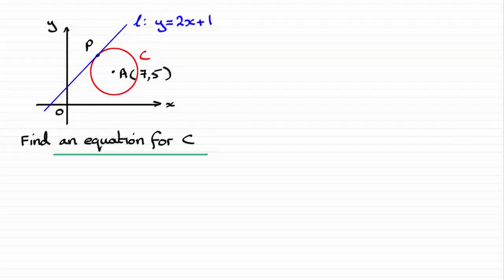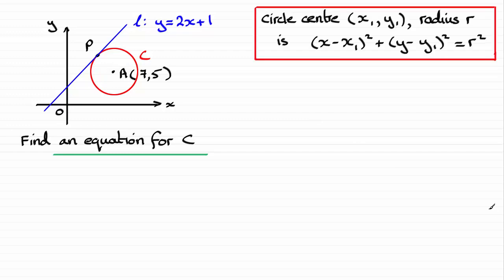For this part of the question, we're asked to find an equation for the circle C. In order to do this, you should be familiar with the equation of a circle. Let's just remind you, it is essentially this: if you've got a circle with center coordinates x₁, y₁ and a radius r, it has this form here.